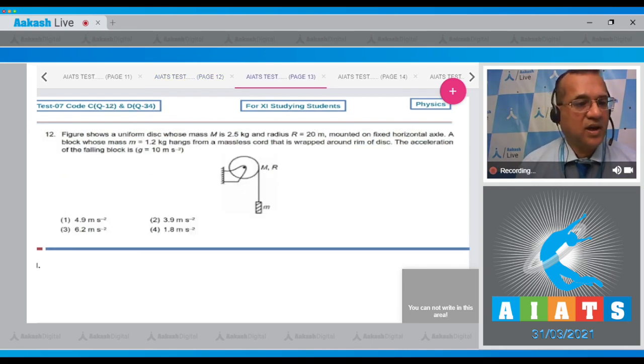Question number 12: The figure shows a uniform disk whose mass capital M is 2.5 kg and radius is 20 meter mounted on a fixed horizontal axle. A block whose mass small m equals 1.2 kg hangs from a massless cord that is wrapped around the rim of the disk. Find the acceleration of the falling block.